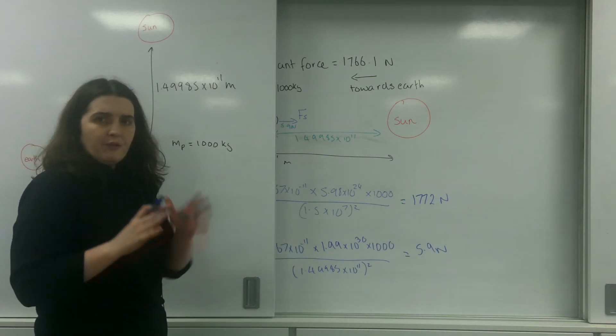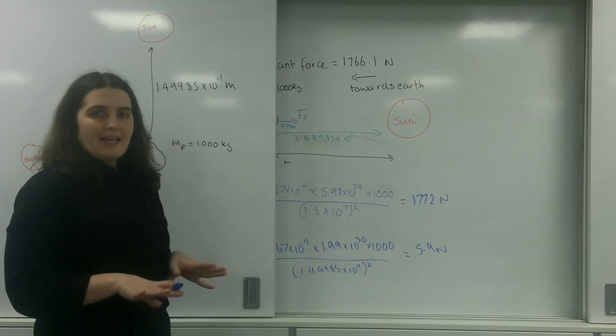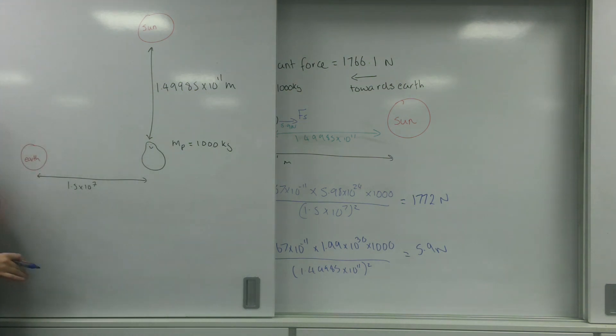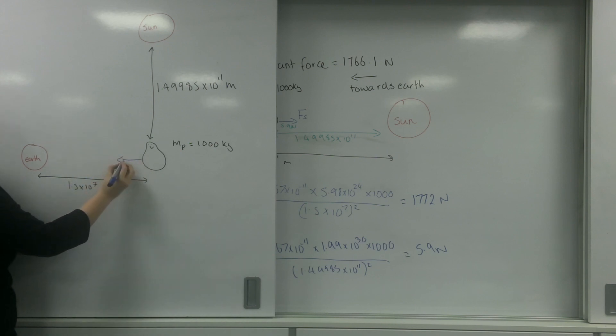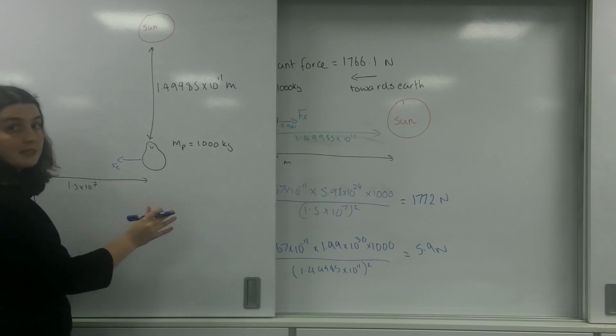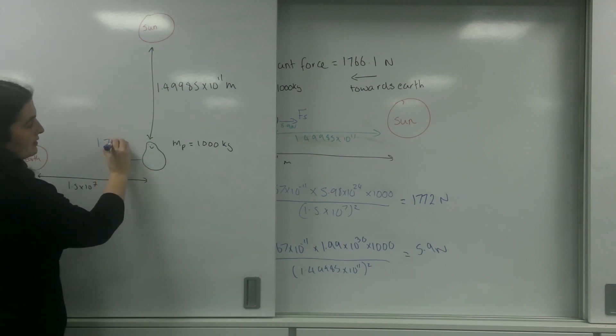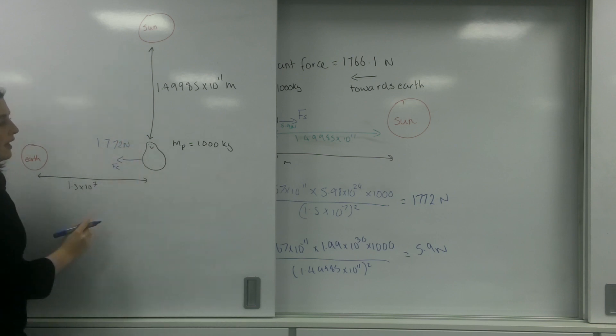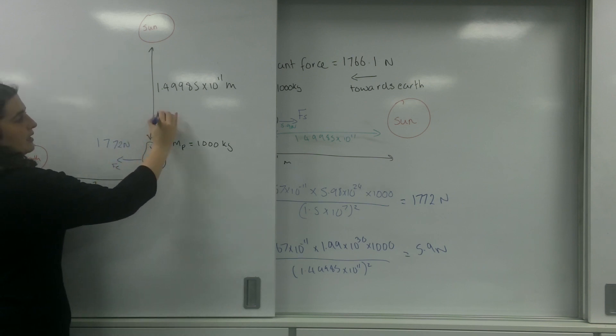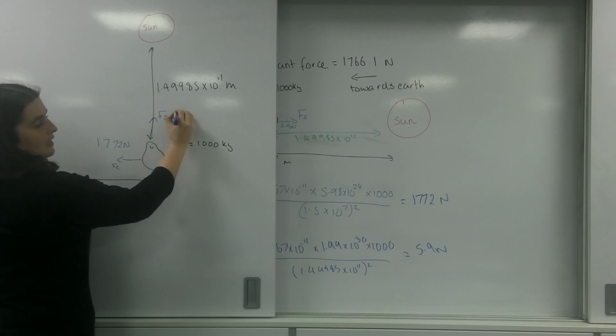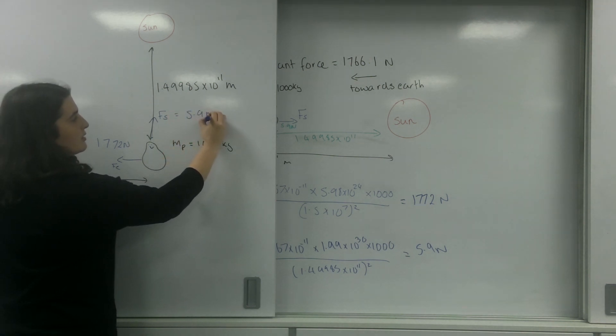So I would work out the forces just as I would before. I would work out the force due to the Earth using Newton's law of gravitation. That's going to be the same value this time because it's the same numbers here, so it's going to be 1772 newtons and the force due to the Sun, which is going to equal 5.9 newtons.